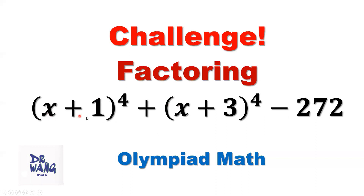For example, look at (x plus 1) to the power of 4 plus (x plus 3) to the power of 4. What is the midterm, or what is the average? The midterm should be x plus 2. So x plus 1, x plus 2, x plus 3 are like consecutive numbers. We define the middle one as y, so x plus 2 equals y, and x plus 1 should be y minus 1. Use the binomial formula to expand both terms — you will have some negative terms that cancel the positive terms, then simplify.